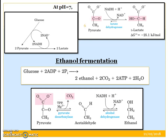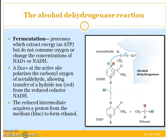In ethanol fermentation, for example, pyruvate gets converted to acetaldehyde and eventually to ethanol, utilizing enzymes pyruvate decarboxylase and alcohol dehydrogenase respectively. Here there is formation of ethanol directly from glucose, and ATP and water are also generated. This reaction requires zinc molecules — zinc is at the active site, which polarizes the carbonyl oxygen of acetaldehyde and allows the transfer of a hydride ion from the reduced cofactor NADH. The reduced intermediate acquires a proton from the medium to eventually form ethanol.